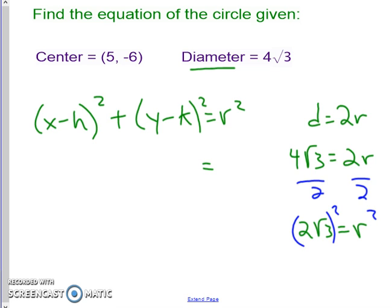remember 2 root 3, so you take the integer times the integer, the outside times the outside, under the radical times under the radical. So 2 times 2, root 3 times root 3, we'd get 4 root 9, so 4 times 3, which would give us 12 for our r squared value.